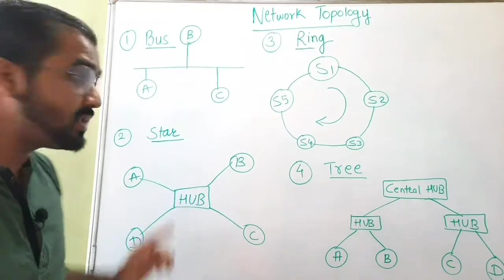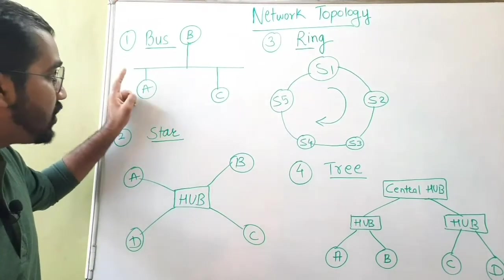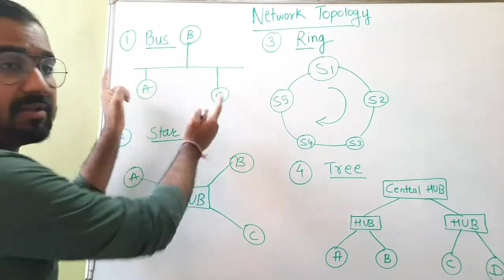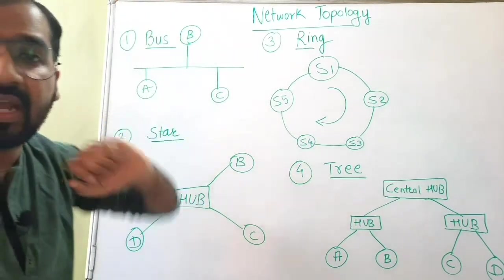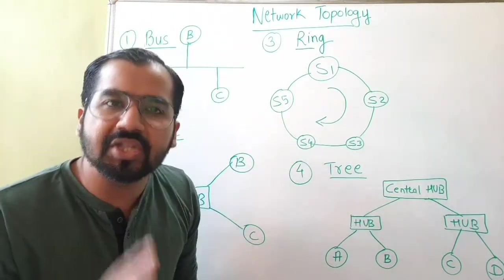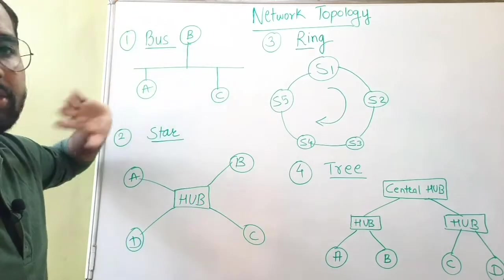Others should not transmit because at the same time when A is also transmitting and if C also starts transmitting or B also starts transmitting, there will be collision. So collision problem exists in the bus topology.